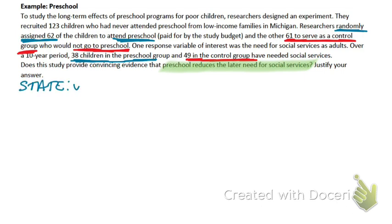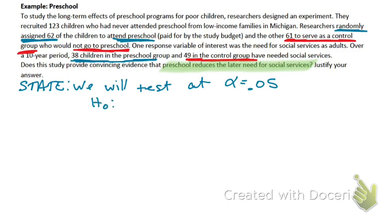State: we will test at alpha equals 0.05 — it did not tell us what significance level to use, so we'll use 0.05. Our null hypothesis is P1 equals P2. The alternative hypothesis is P1 less than P2. That one needs an equal sign in the null, and what we just wrote should be the alternative.